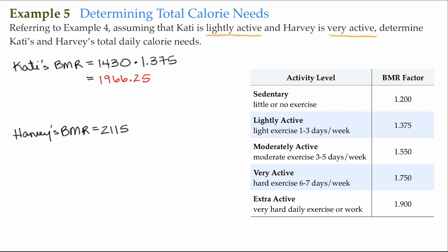We do the same thing for Harvey's BMR. Harvey is very active, so we take his BMR and multiply it by 1.750. Harvey's total calorie needs are 3,701.25 calories per day in order to maintain his weight. And there we go.